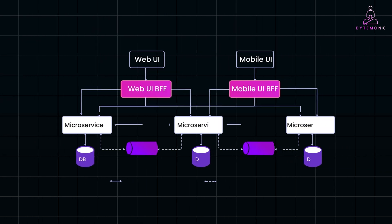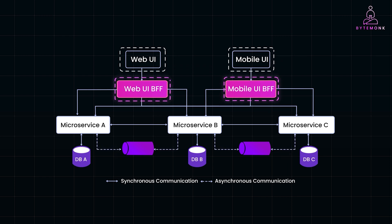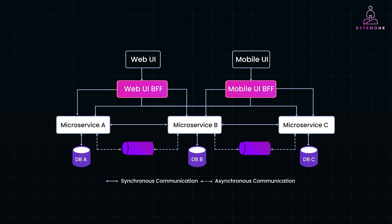The BFF pattern is a specialized service layer between your applications and your backend services. Each client — whether it's a mobile app, a web app, or any other type of front-end — has its own dedicated backend service, or BFF, that caters specifically to its needs. Unlike an API Gateway, which serves as a single entry point for all clients, the BFF pattern allows you to create tailored backends that meet the unique requirements of each client type. This not only simplifies client-side development, but also optimizes the performance and security of your application.